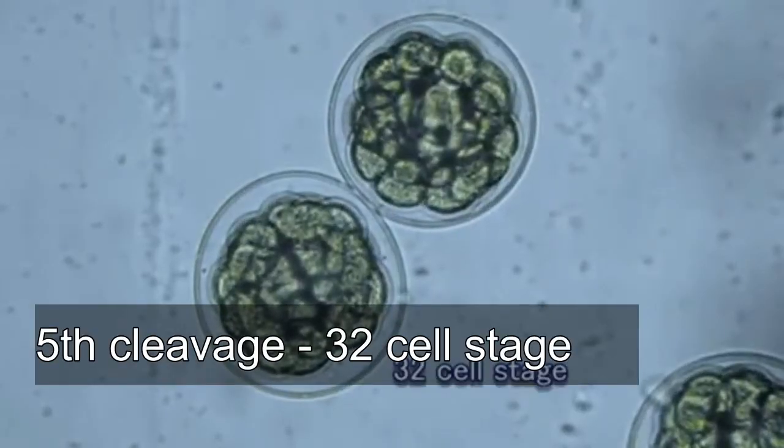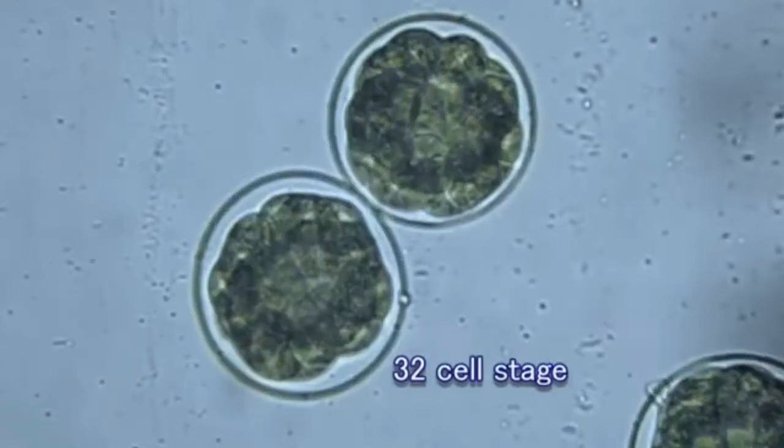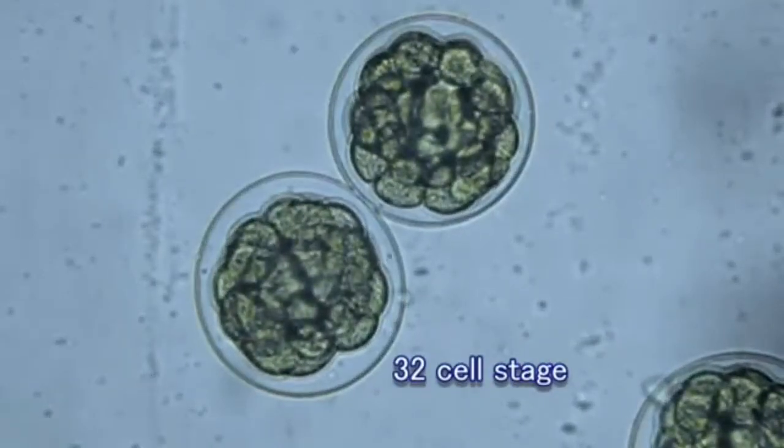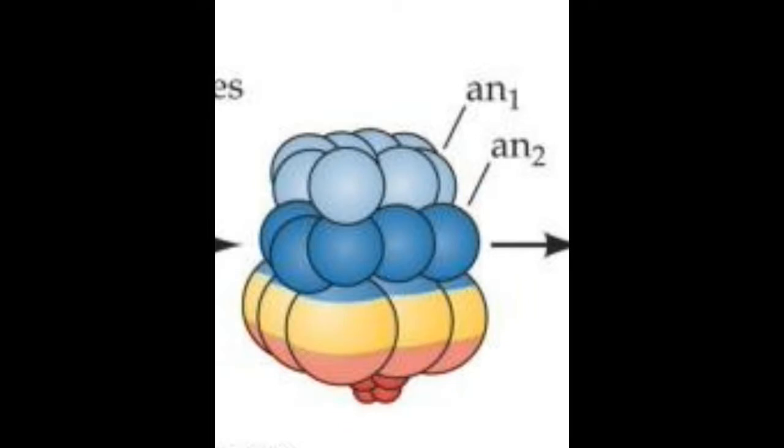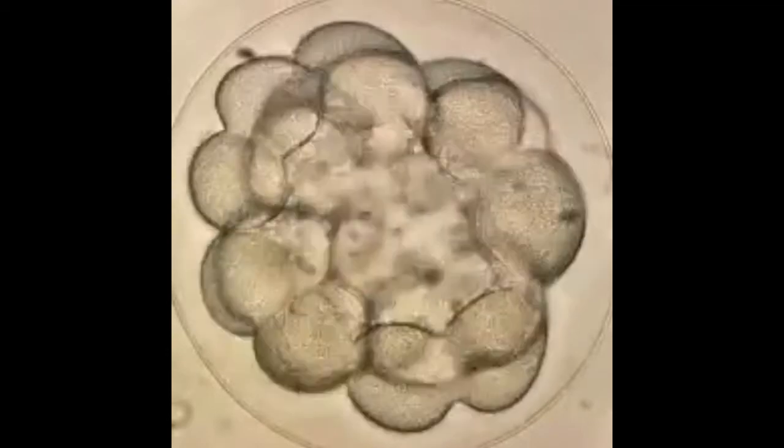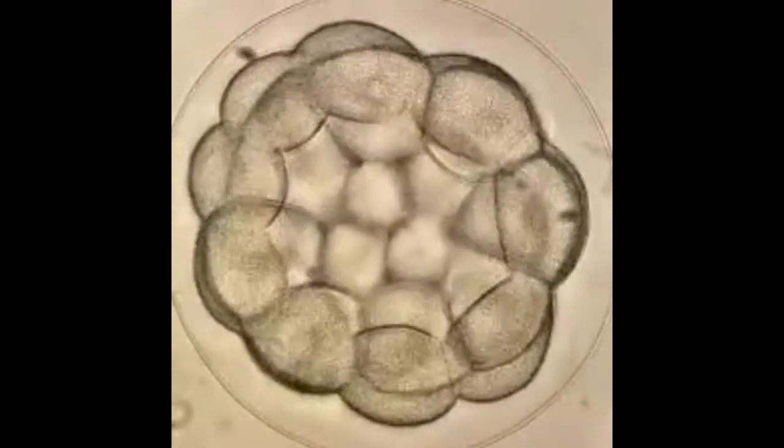Cleavage ultimately establishes five tiers of cells for a total of 32 cells. The eight mesomeres in the animal hemisphere divide to form two tiers of eight cells each: the upper tier are now called the AN1 blastomeres and the lower tier the AN2 blastomeres. The four macromeres divide longitudinally to form one tier of eight blastomeres. The four micromeres divide to form two tiers of four cells each: the upper tier are called the large micromeres and the lower tier near the vegetal pole are called the small micromeres.